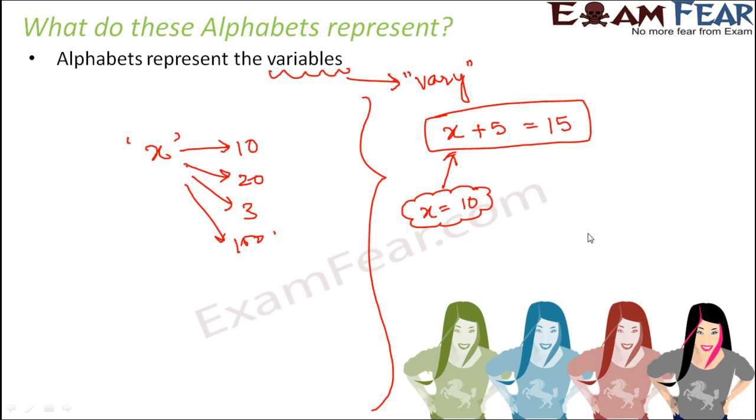For example, if it would have been something like this, x plus 2 is equal to 20. In that case, do you think x will be equal to 10? No. In that case, x would be equal to 18. So the same x can take different values in different equations. These equations are nothing but different situations. So we can say that x is a variable.